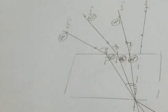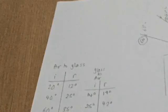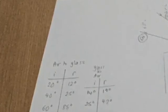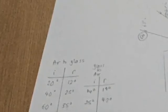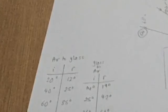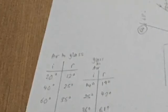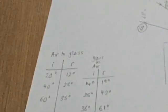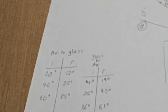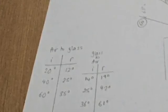These were my results. So, we can see that for air to glass, the angle of refraction is always less than the angle of incidence, because the light is bending towards the normal. And when the light is refracted from glass to air, the angle of refraction is always greater than the angle of incidence, because the light bends away from the normal.